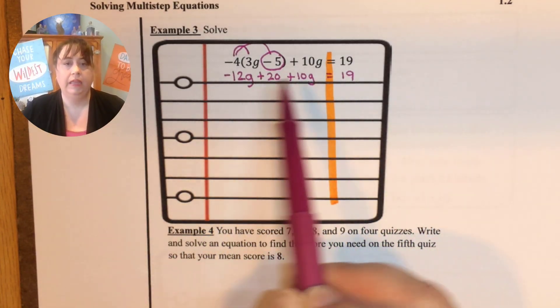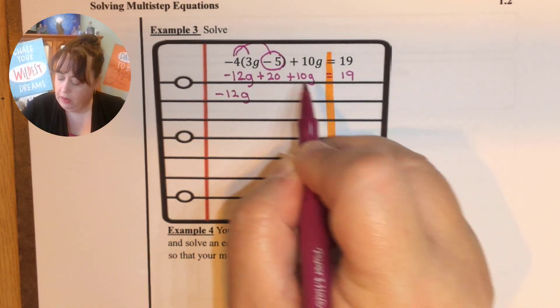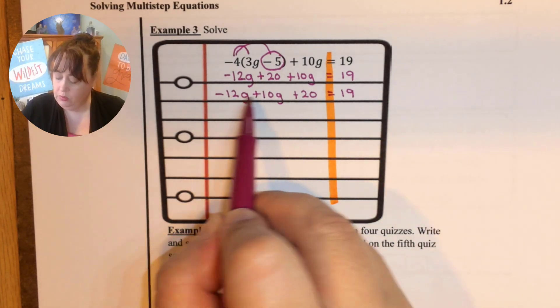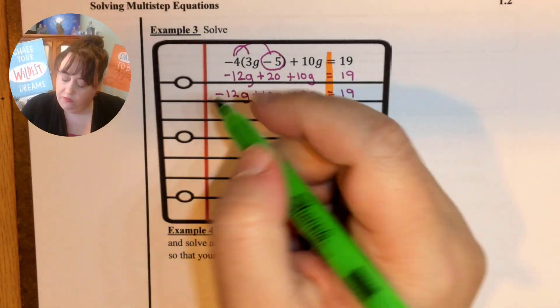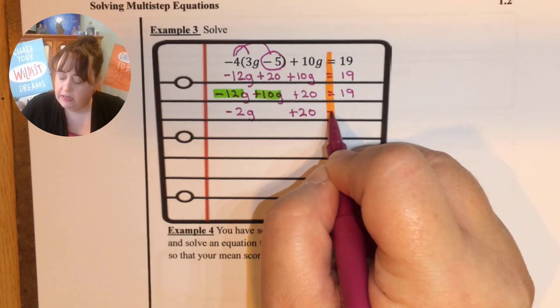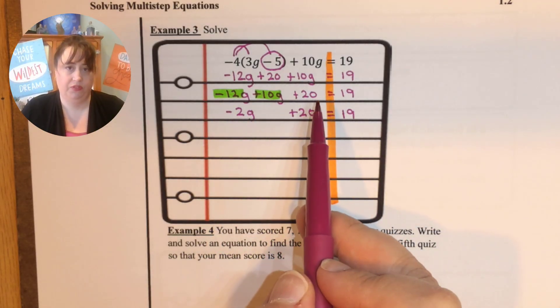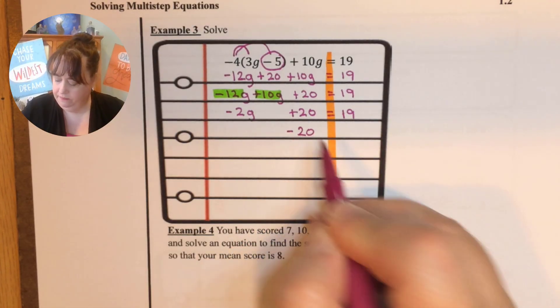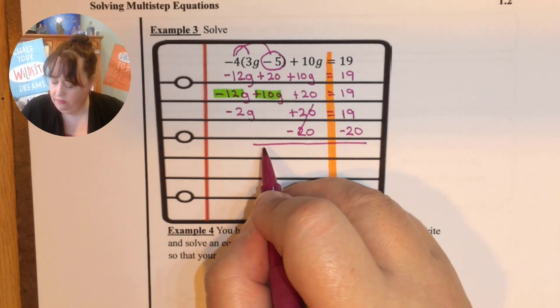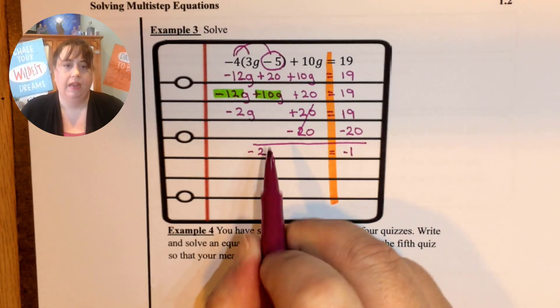So now I have to look for any like terms and I see some. I'm going to rewrite this and put my like terms together to make it just a little bit easier to follow. So I have a negative 12 g and here's my 10 g. I'm going to move that over plus 20 equals 19. So negative 12 plus 10. So what I am paying attention to are just the coefficients. So negative 12 plus 10 is a negative 2 g and then again copy down the parts that didn't change. So I cannot touch that negative 2 until the 20 has been moved. So how do we make that go away? We're going to subtract. So that's zero and then that goes right down negative 2 g equals 19 minus 20 is a negative 1.